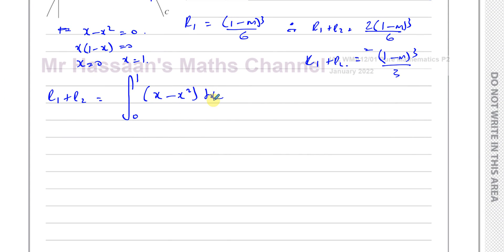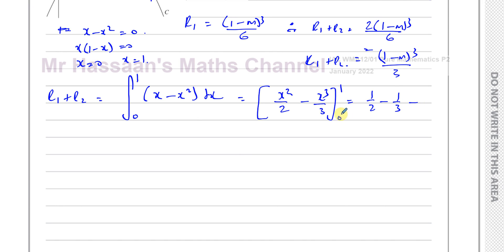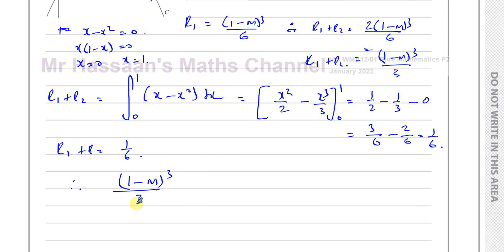The curve x minus x squared equals 0 gives x times (1 minus x) equals 0, so x equals 0 and x equals 1. The area of R1 plus R2 is the integral from 0 to 1 of (x minus x squared) dx, which equals x squared over 2 minus x cubed over 3, evaluated from 1 to 0. That gives one half minus one third, which equals 3 over 6 minus 2 over 6, equal to 1 over 6.